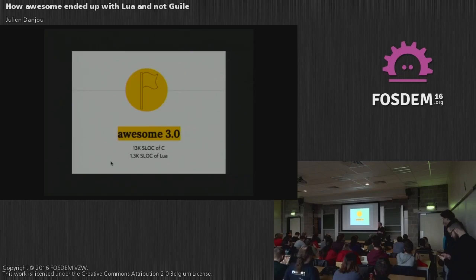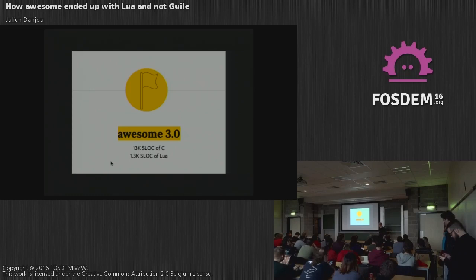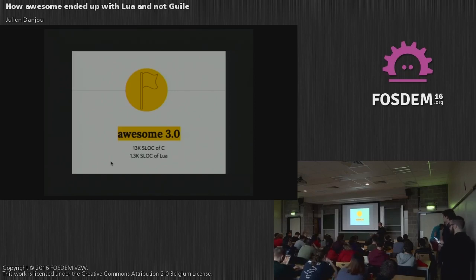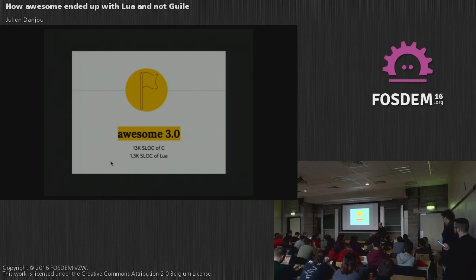That was version 3 of Awesome, which was released with Lua as the programming language. We exposed only a few functions back then — we were not able to do a lot of the things you can do today with Awesome 3.5. If you compare to what you were able to do with something like DWM with its only 2,000 source lines of code, with Awesome you had about 13,000 lines and a bit of Lua, and you could do a lot more things.